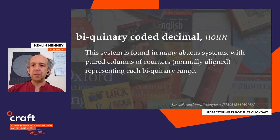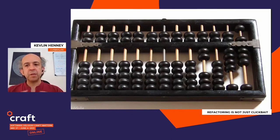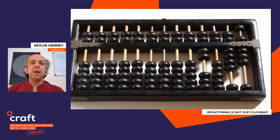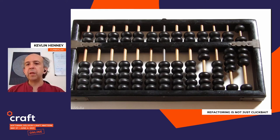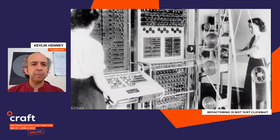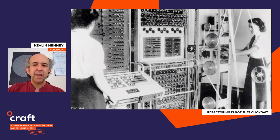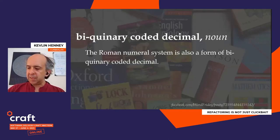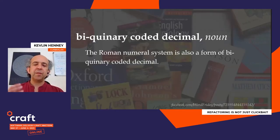It was actually used in old computers before they figured out: why are we trying to fake up the decimal system? Let's just use binary. We can see this in the classic Colossus machine. And the Roman numeral system is a system based on biquinary — you can see the biquinary idea visible in it. Let's try a simple conversion.